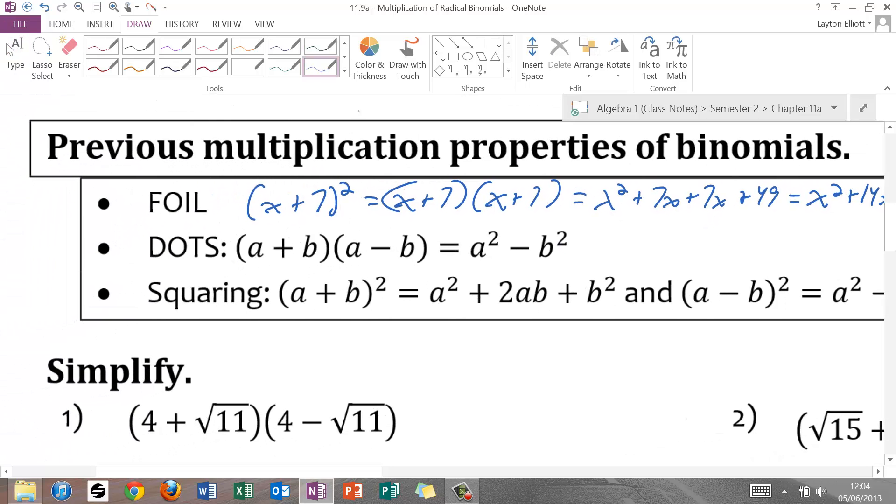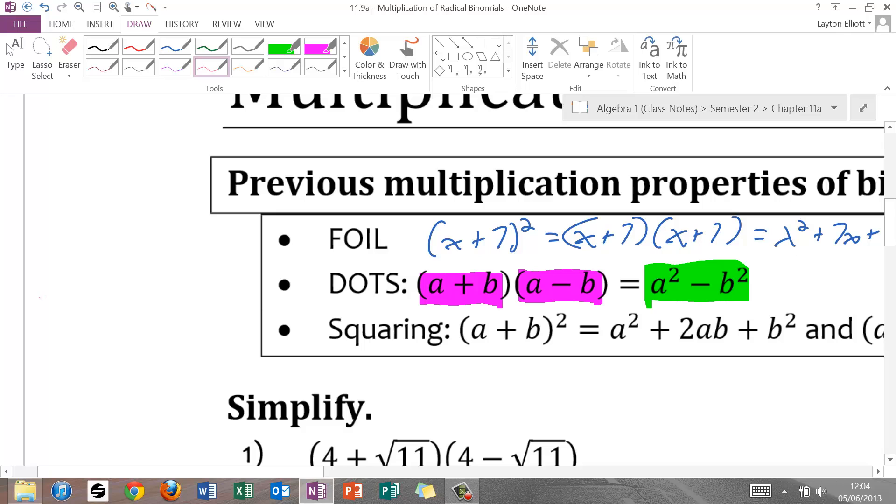The second thing to remember about multiplication of binomials are when we have the difference of two squares factoring pattern. That leads to the factoring of two conjugates. In other words, looking at it the other way, when I take a binomial like x minus 4 and I multiply it by a binomial with the opposite middle sign, x plus 4, and we call those conjugates, my product is x squared minus 16 because the plus 4x and the minus 4x are opposites and add to 0.